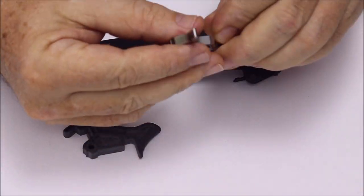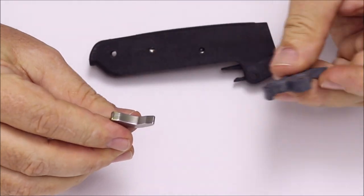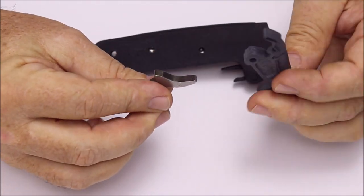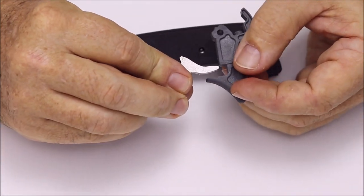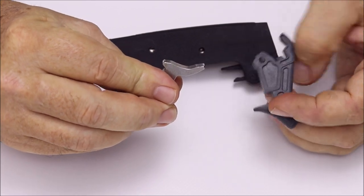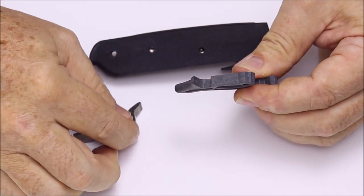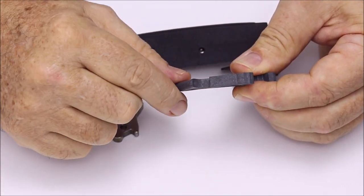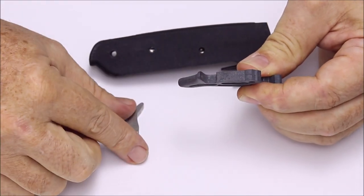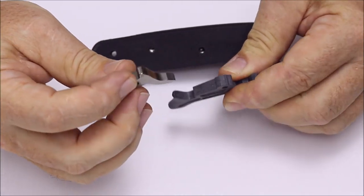If you look at the stainless steel sear, the trailing edge that engages the trigger, there's zero wear on that part. On the trigger itself, we can see a slight shininess on that surface. Other than that, zero wear.